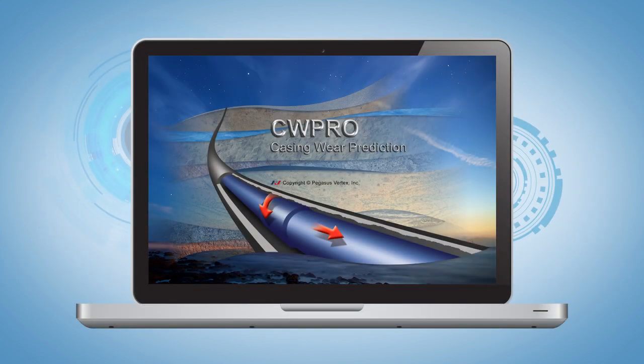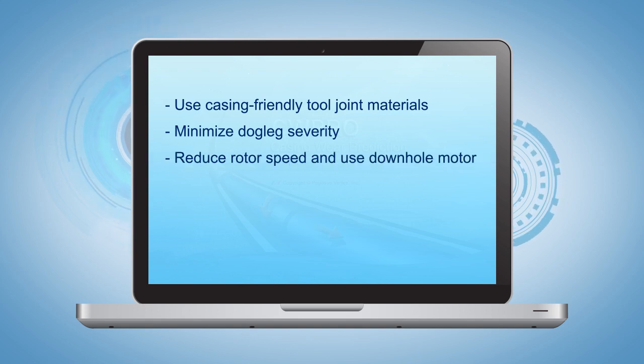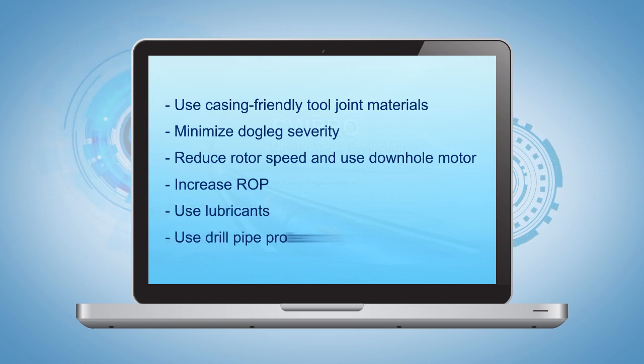Computer modeling provides a foundation for the following casing wear preventative measures: use casing friendly tool joint materials, minimize dogleg severity, reduce rotor speed and use downhole motor, increase ROP, use lubricants, and use drill pipe protector.